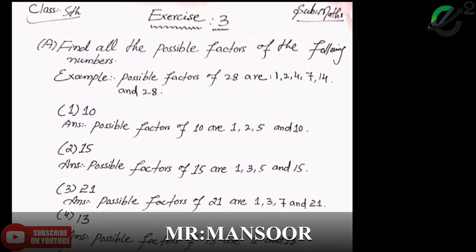Question number 3 is 21. What are the possible factors of 21? Answer: possible factors of 21 are 1, 3, 7 and 21.